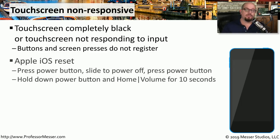To perform a soft reset in iOS, you would hold down the power button until the power off message is displayed, slide to power off, and then after the phone has powered off, press the power button again to power it back on.